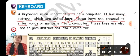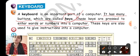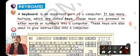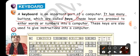A keyboard is an important part of a computer. It has buttons, and these buttons are called keys. These keys are pressed to enter words and numbers into a computer. The main purpose of the keyboard is to enter words or numbers — so by pressing these keys, we can type whatever we need.